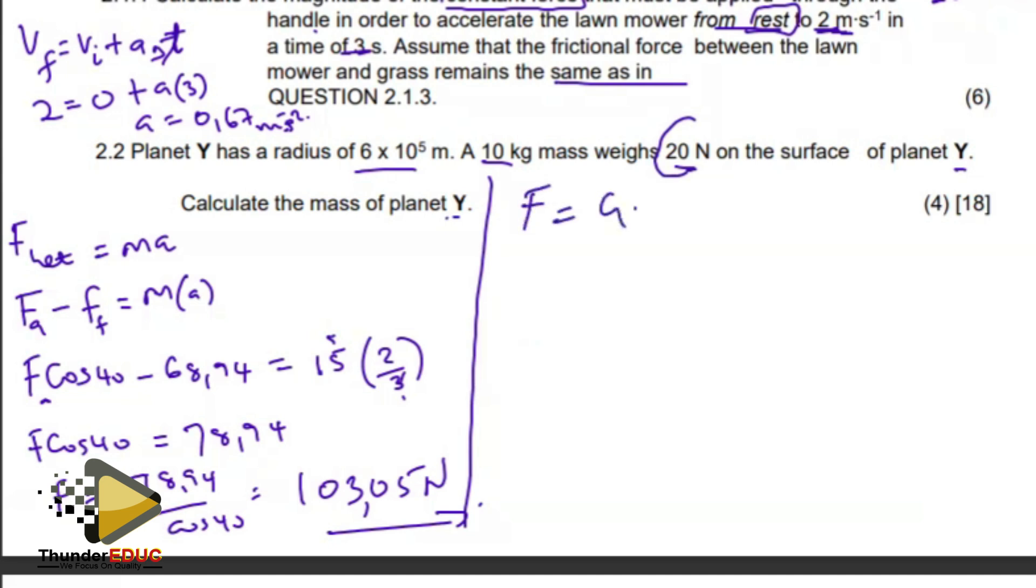From F equals G M1 M2 over R squared, my force is going to be 20. I know my G from the information table, 6.67 times 10 to the negative 11, multiplying it by the 10, multiplying it by the mass of Y. And then the radius is 6 times 10 to the 5, everything must be squared.